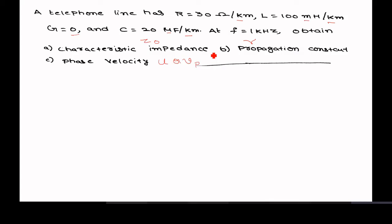This is a straightforward problem. The R, L, G, and C values are given and so is the frequency. The key thing is that while substituting the values, the given quantities are per kilometer, but in the formula we need only per meter. So for R, you have to divide by 1 kilometer, meaning multiply by 10 to the power of minus 3.